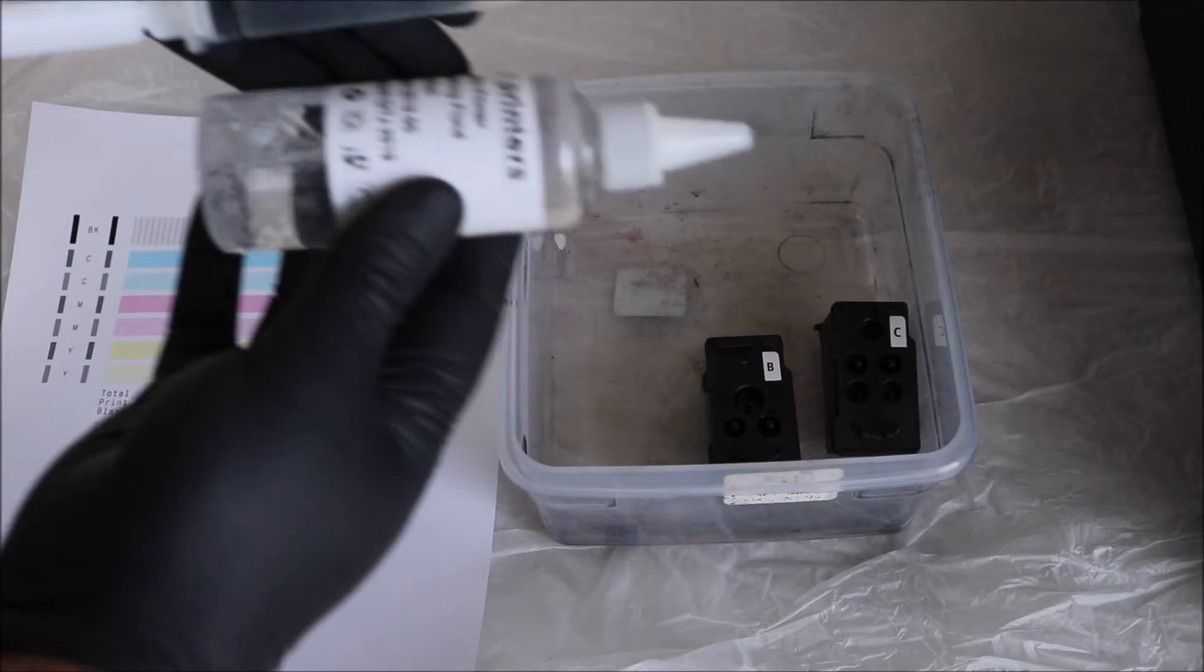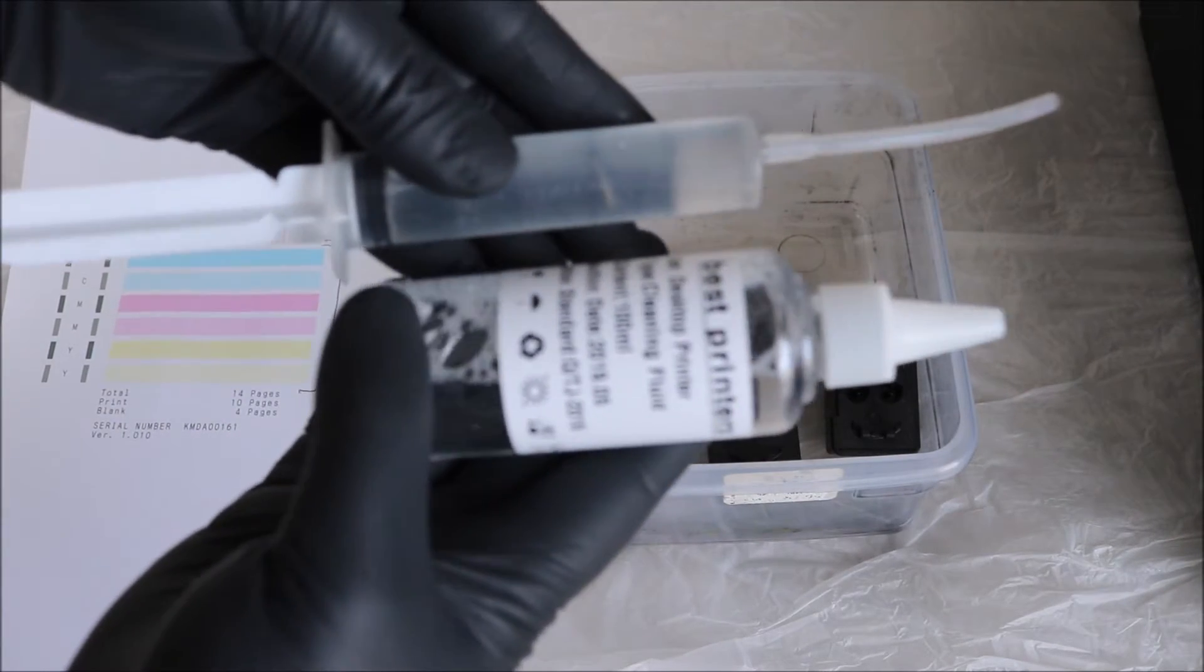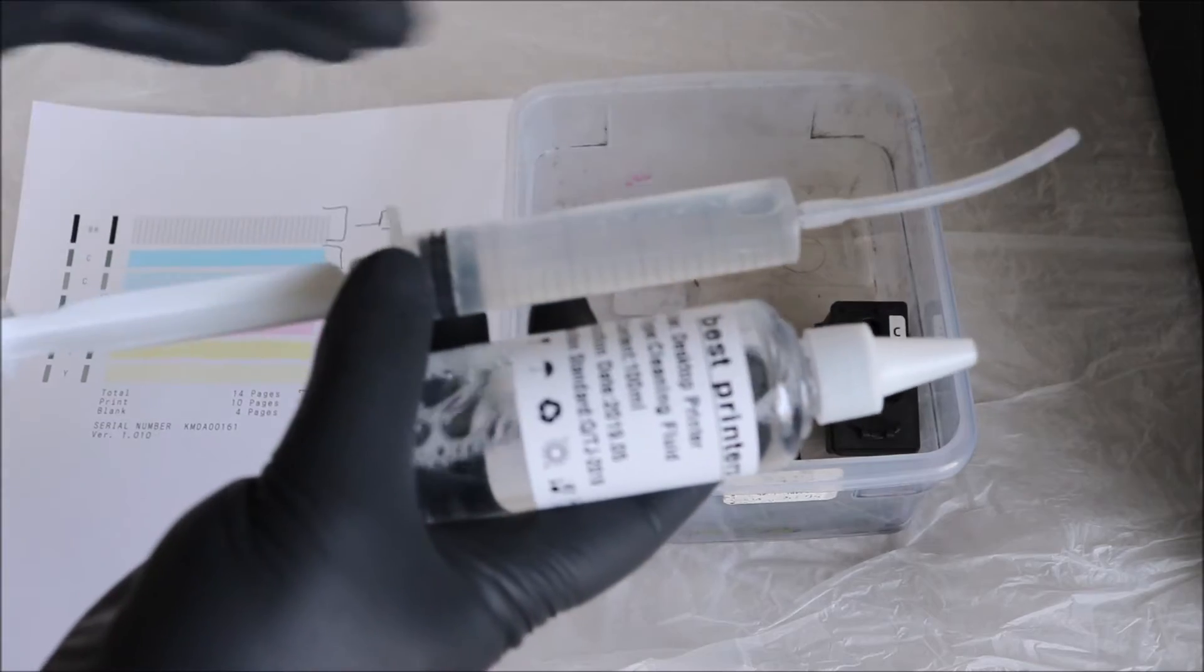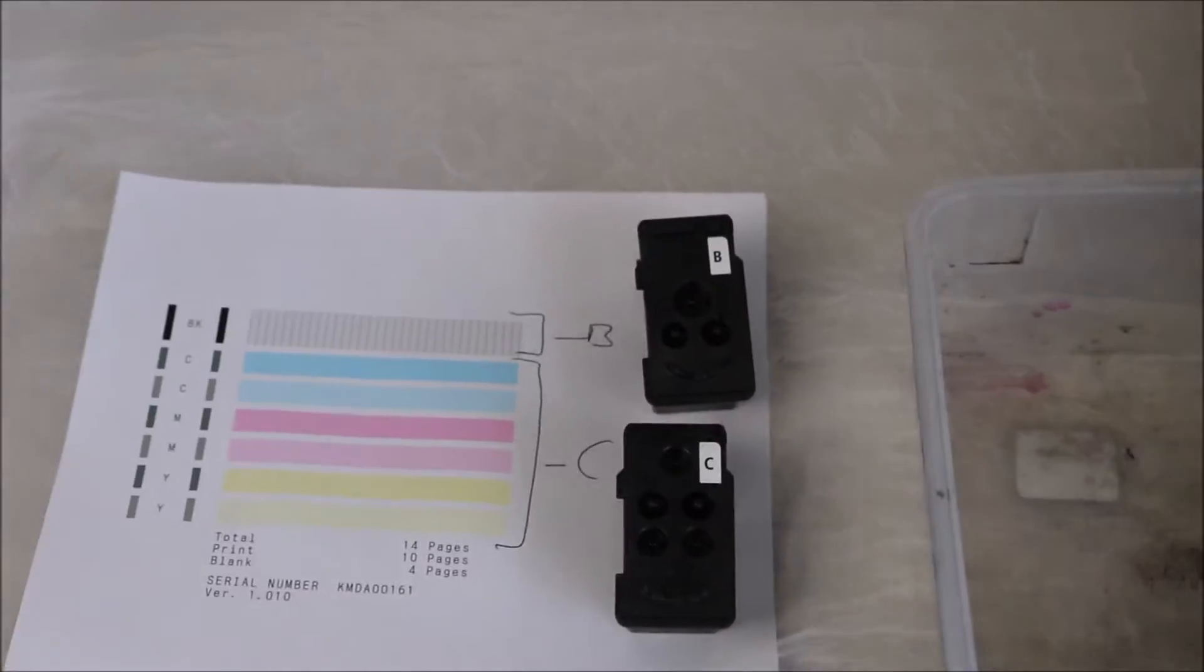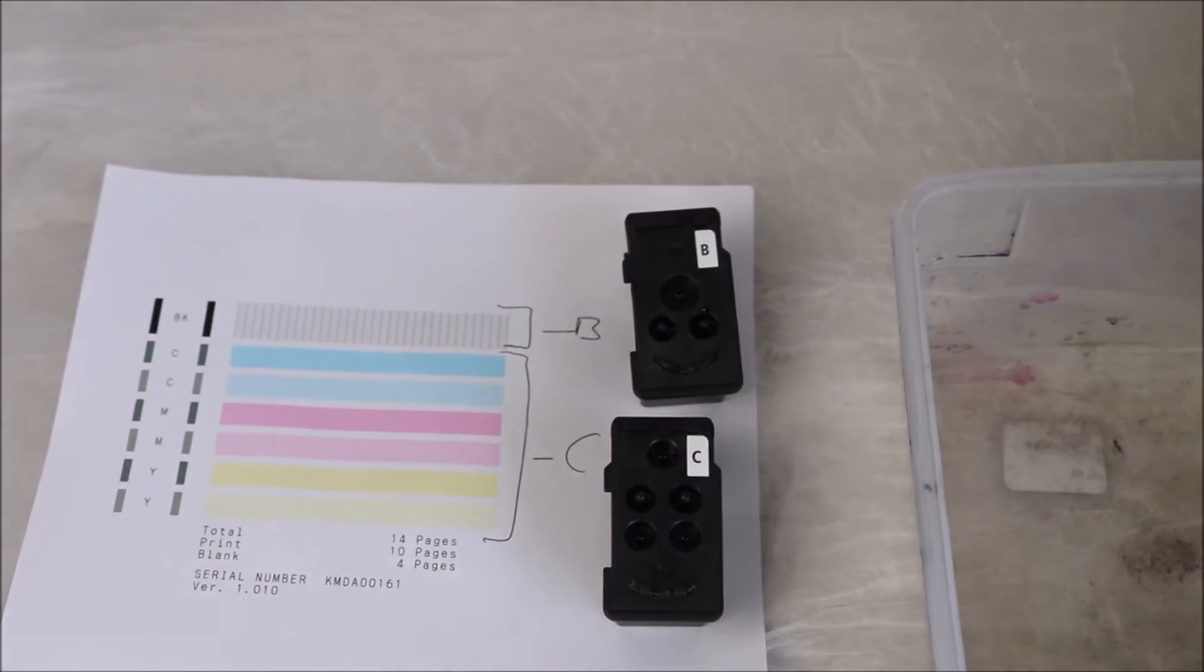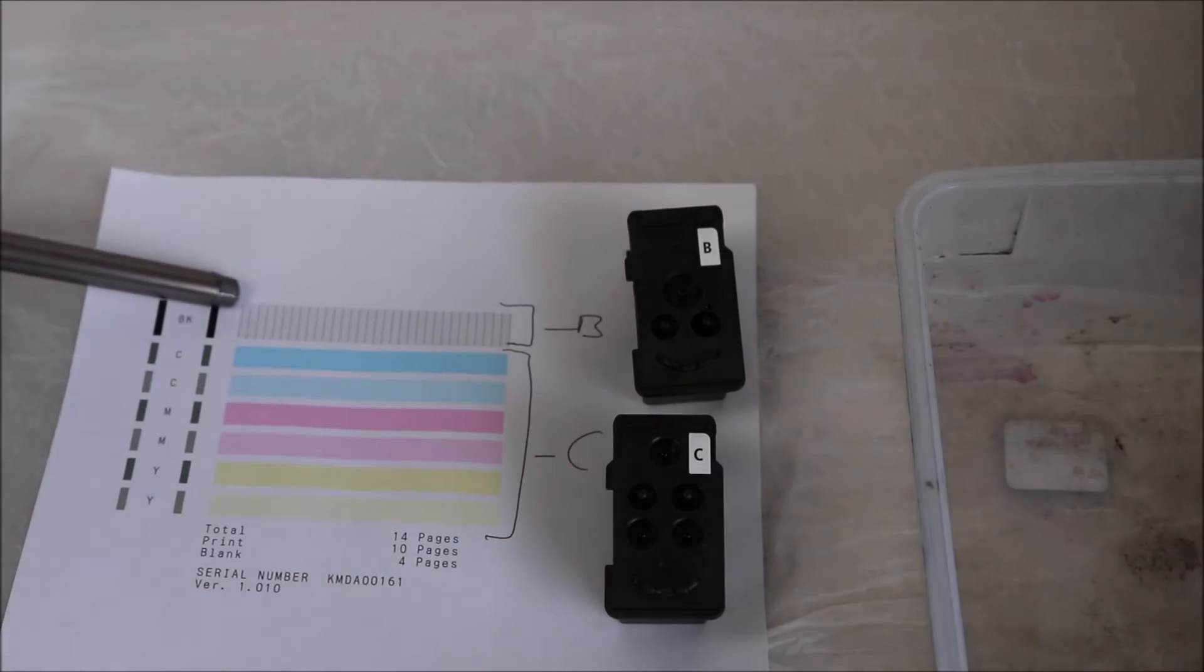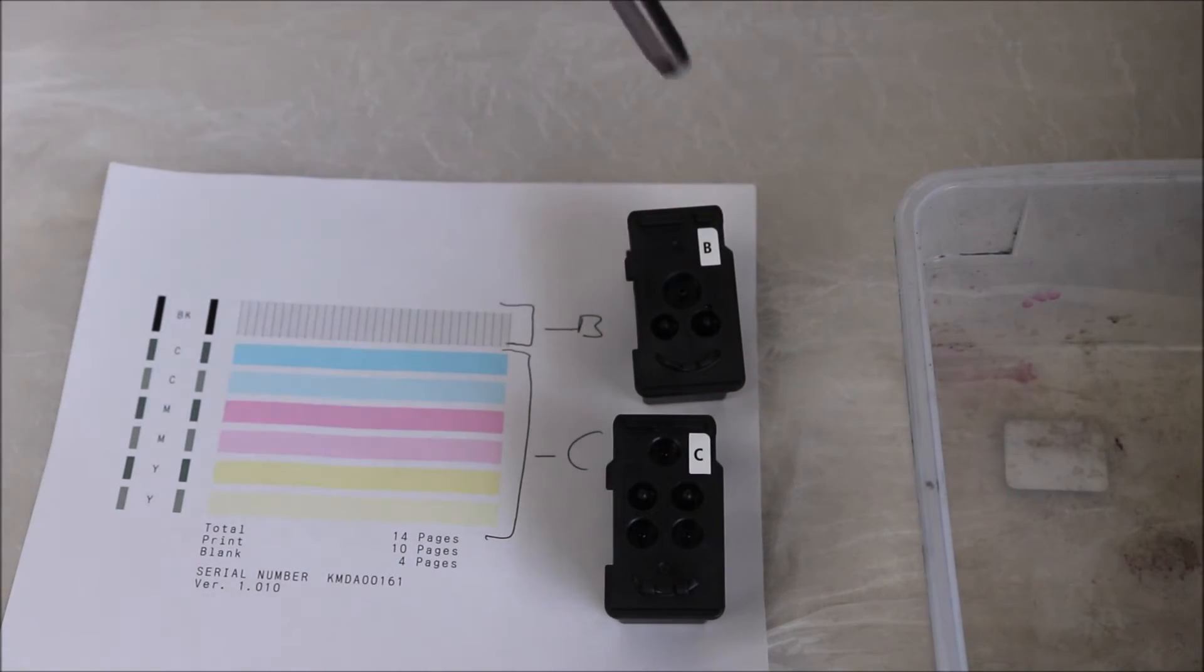But at this moment, this is where you're going to be using your Best Printers Cleaning Kit. You're going to take your syringe, fill it up with the cleaning solution, and determine what color you're having issues with. Again, with the nozzle check, once you've determined that, you will then go in.